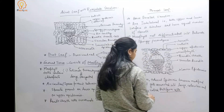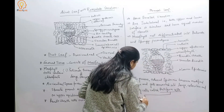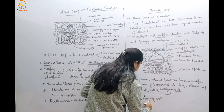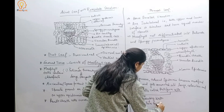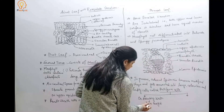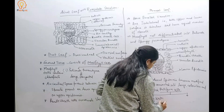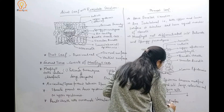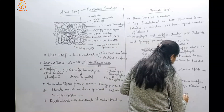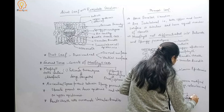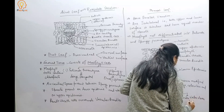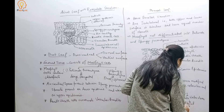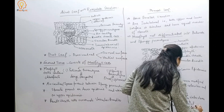When bulliform cells absorb water, they turn turgid and the leaf surface of grasses becomes exposed. On the other hand, under water stress conditions, the bulliform cells become flaccid, and once they turn flaccid, the leaf surface rolls up.